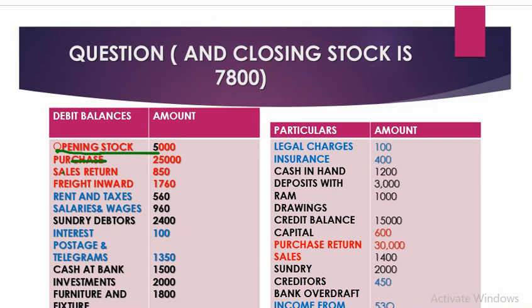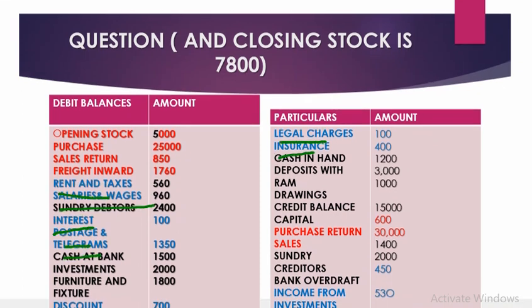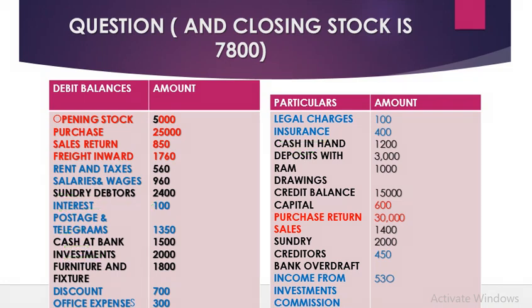Items belonging to the trading account include: opening stock, purchases, sales return, freight inward, carriage inward, cartage inward — these are related to purchase or production. In the trading account, we take only those expenses related to production and purchase, along with purchase returns, sales, and closing stock given outside the trial balance. Items belonging to the profit and loss account include: rent and taxes, salary and wages, interest, postage and telegraph, discount, legal charges, insurance, income from investments, commission, and office expenses.